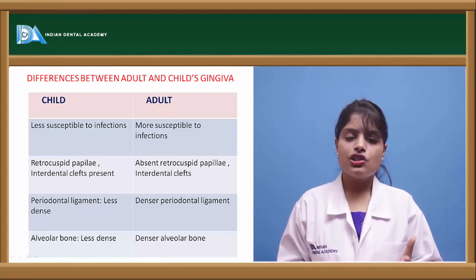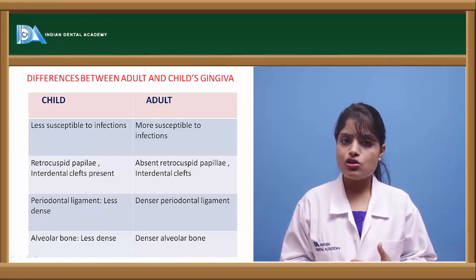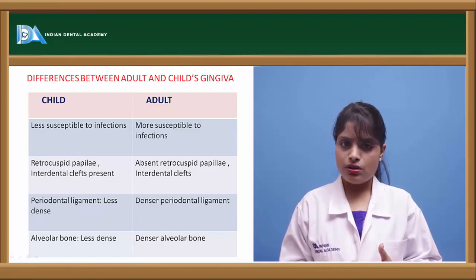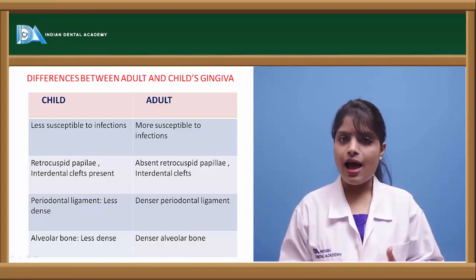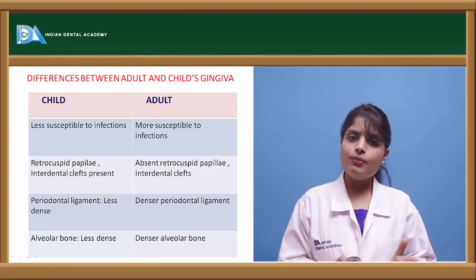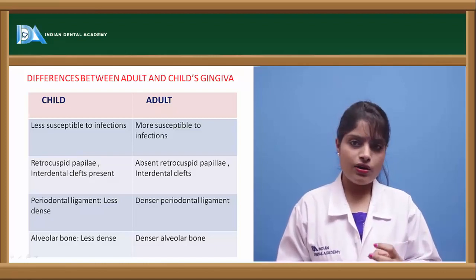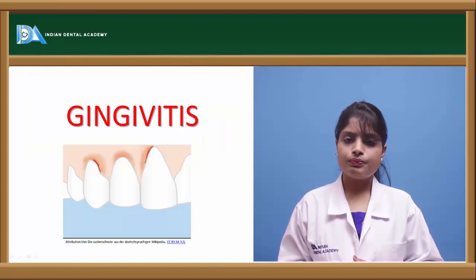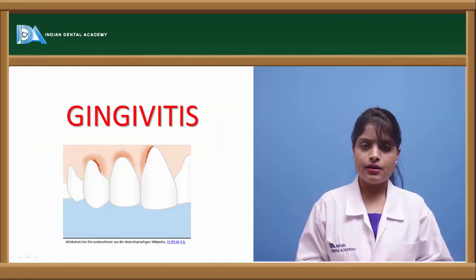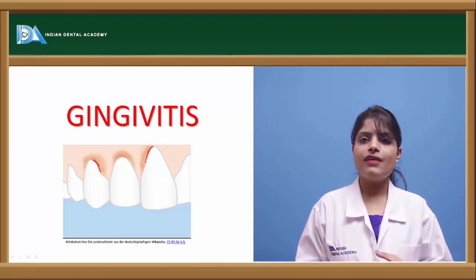The retrocuspid papilla is present in about 85% of children. The gingiva of a child is less susceptible to infections because the rate of formation of fibers exceeds the rate of destruction. It is more keratinized and has saddle interdental areas. The alveolar bone of a child is more spongy and less dense than that of an adult. The disease or inflammation of gingiva is known as gingivitis.